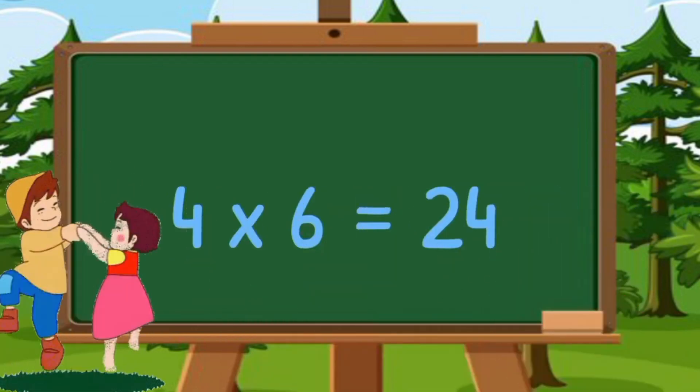Table of eleven. Table of ten. 11 1's are 11. 11 2's are 22. 11 3's are 33. 11 4's are 44. 11 5's are 55.